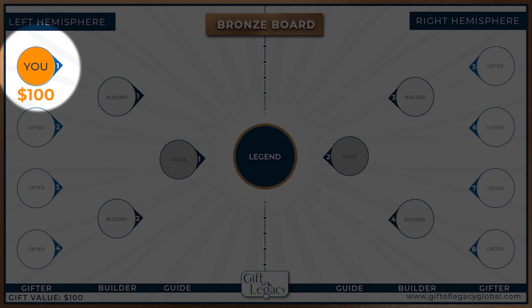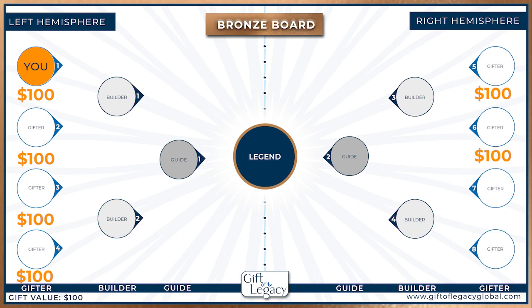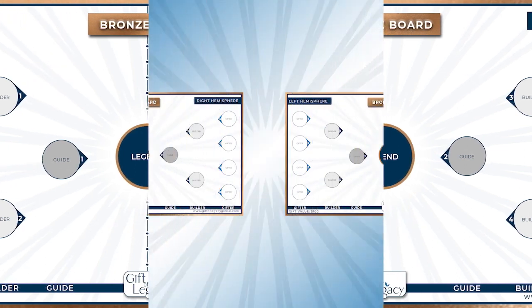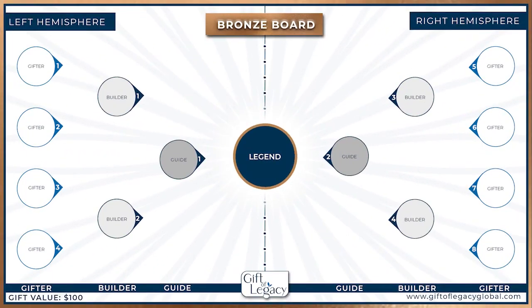You enter a board as a Gifter. The purpose of the Gifter is to gift an unconditional $100 to the Legend of the board. All eight Gifters will do this, and the Legend of the board will receive $800 in gifts. This will complete the board and split the left and right hemispheres, starting two new boards. The two Guides are now Legends on their own boards.